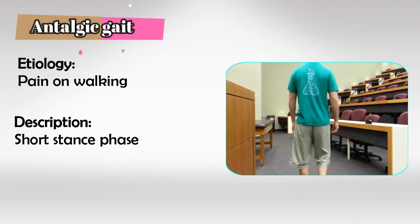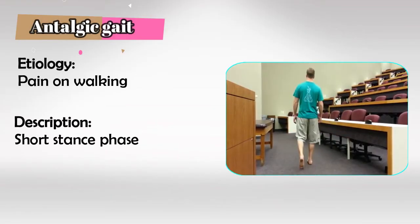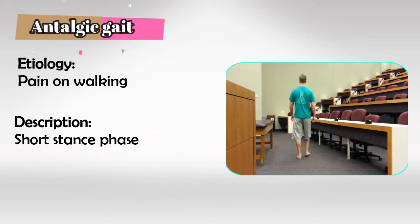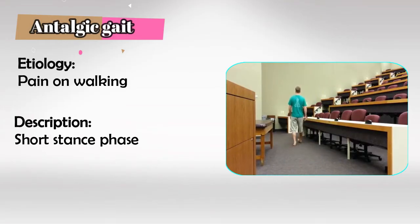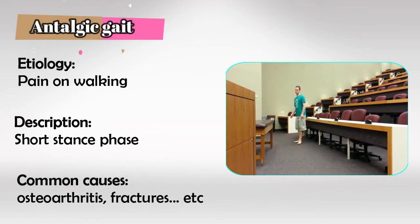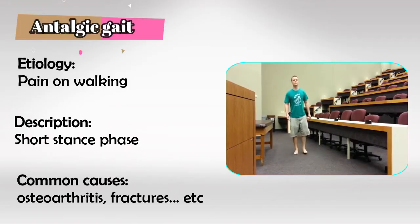Antalgic gait is also pretty common and it's caused by pain, usually in one leg. The patient would avoid bearing weight on that leg, so it presents with a short stance phase. Common causes include fractures, infection of the joints, maybe osteoarthritis, and so on.